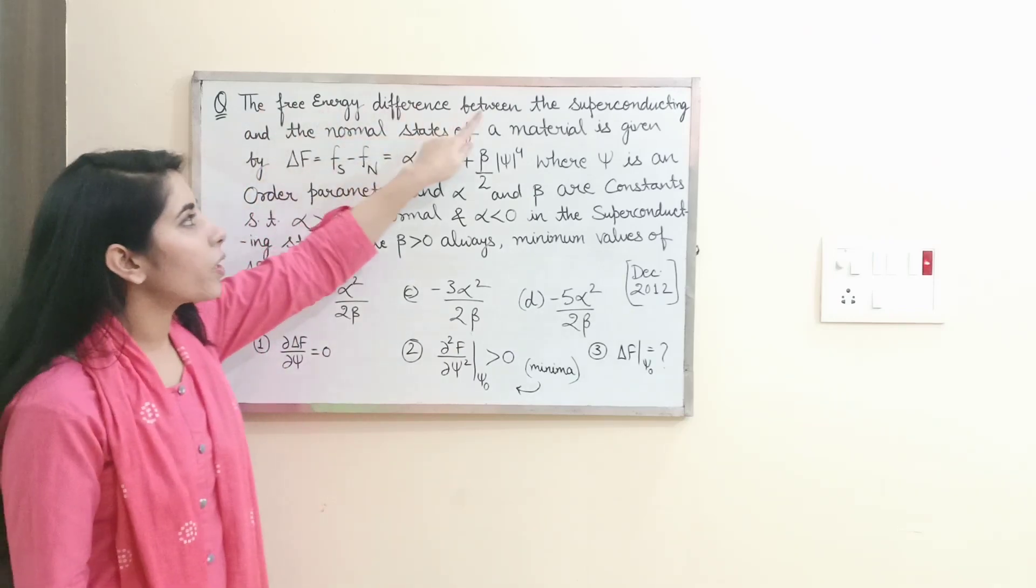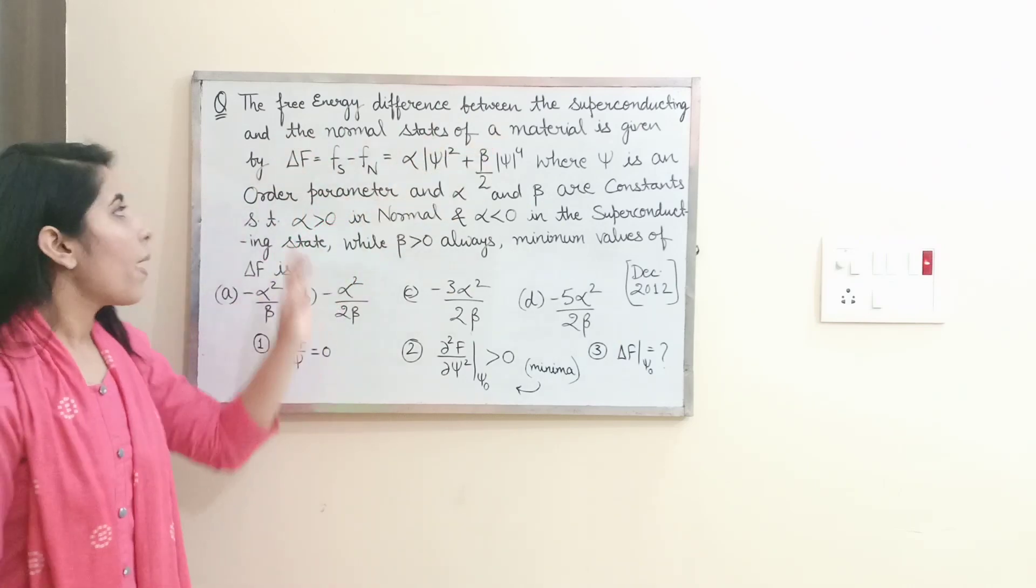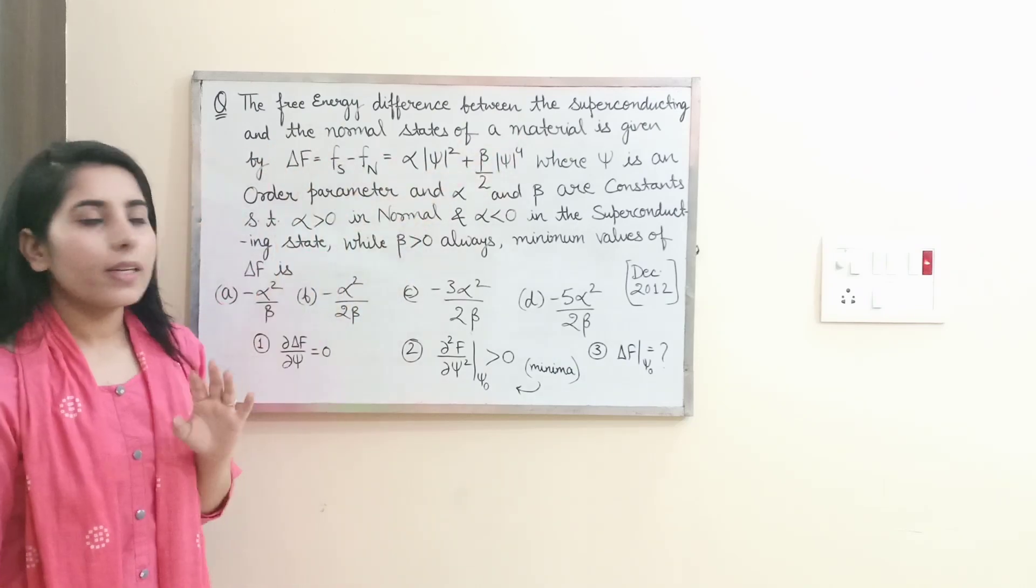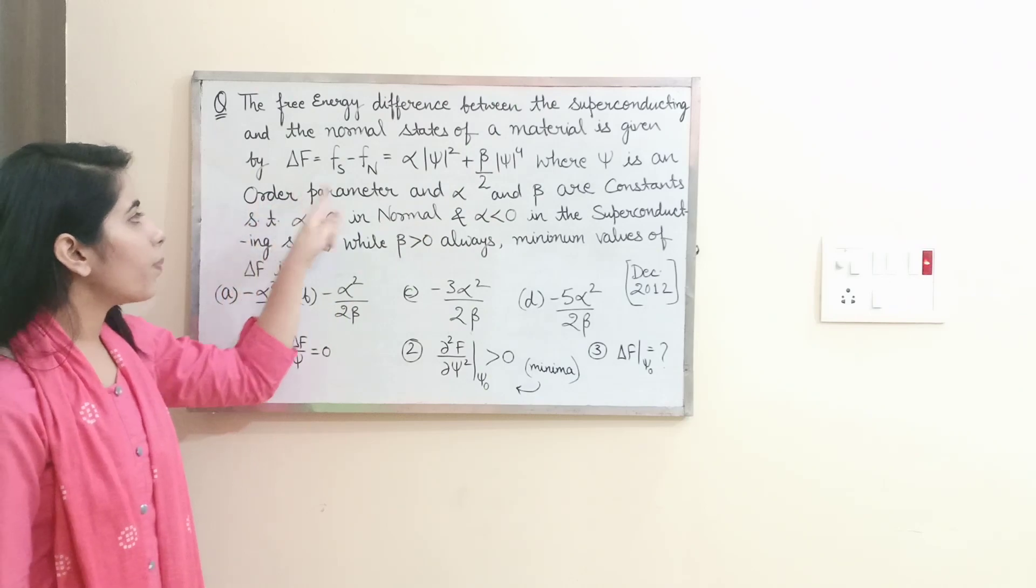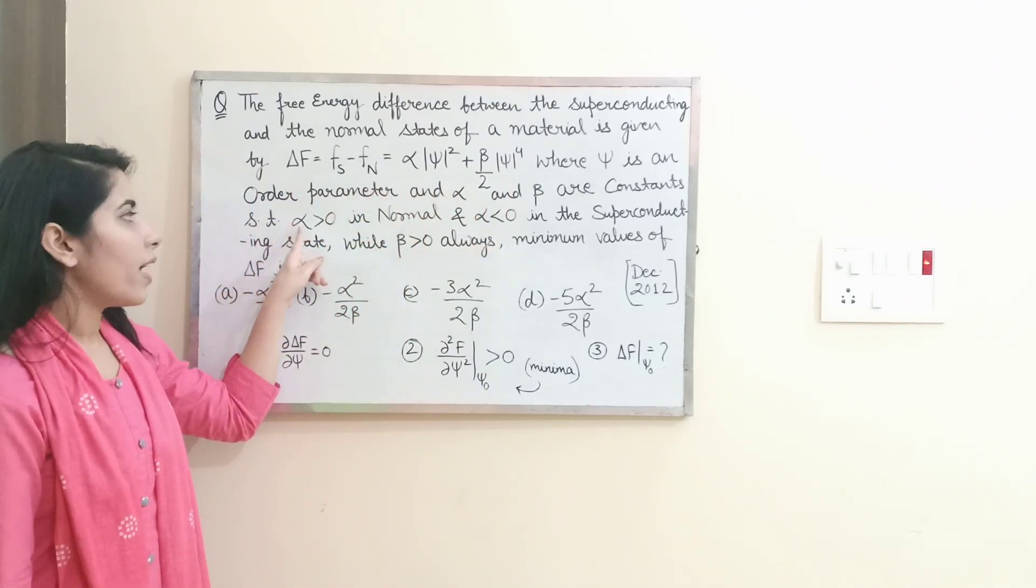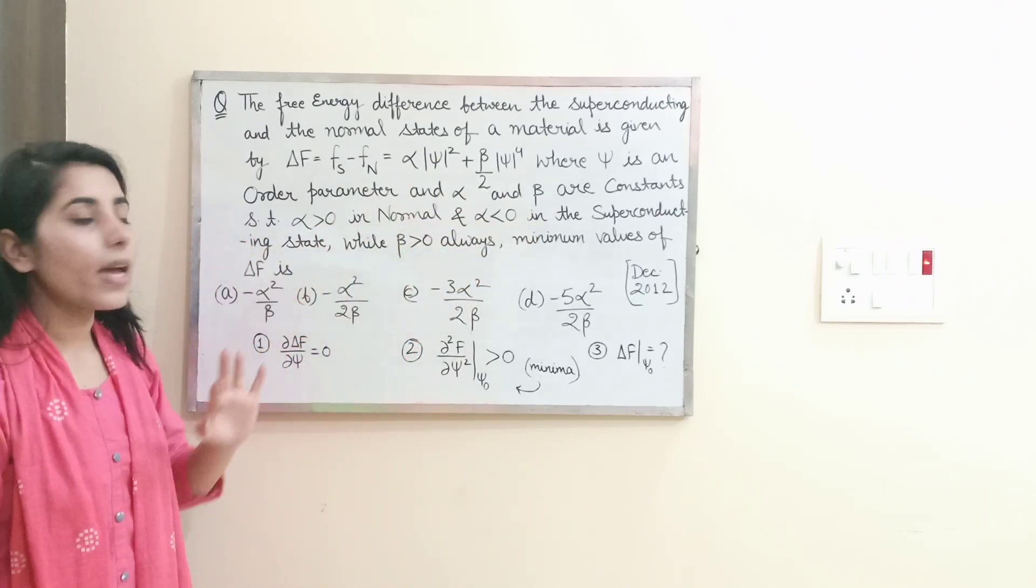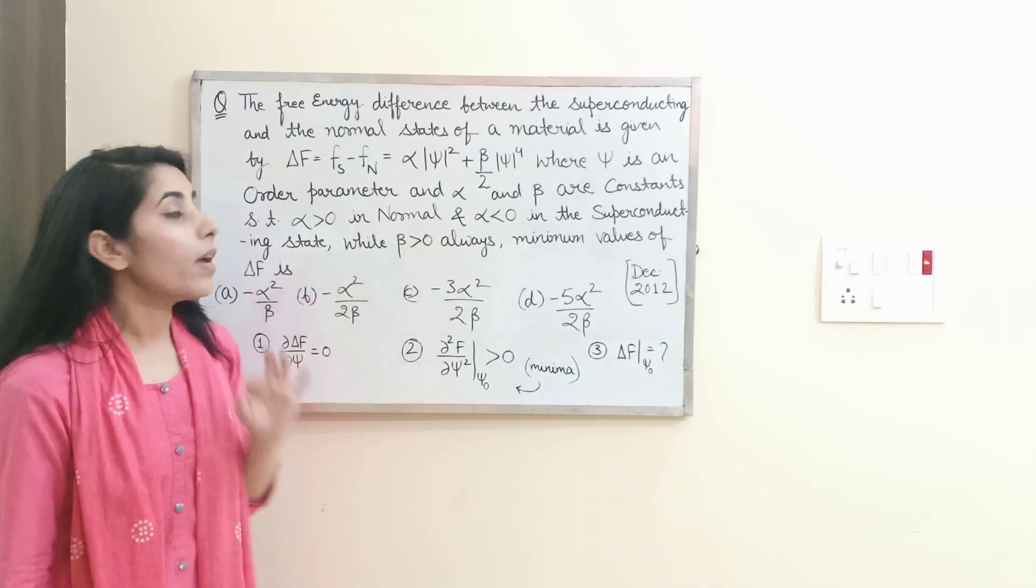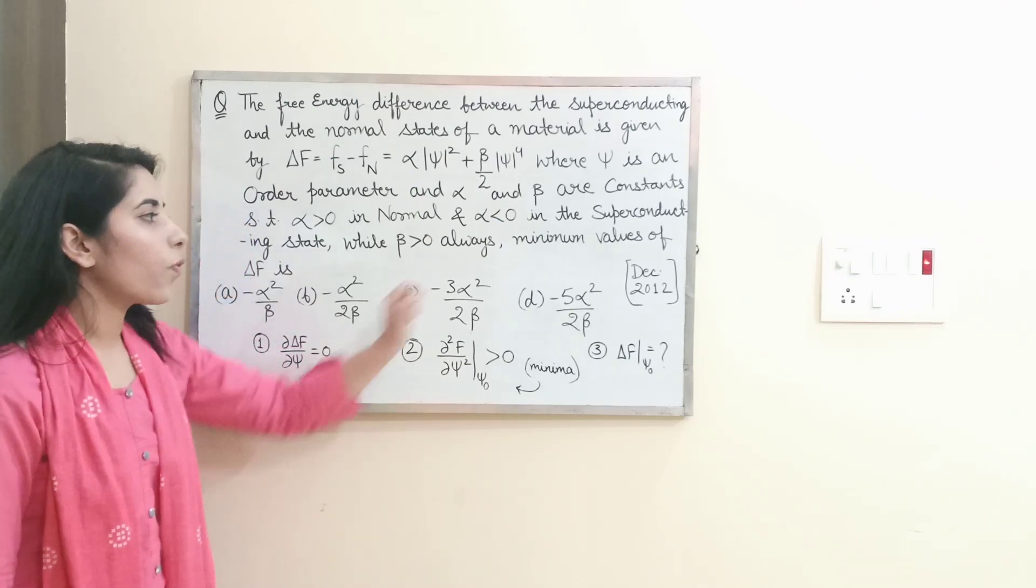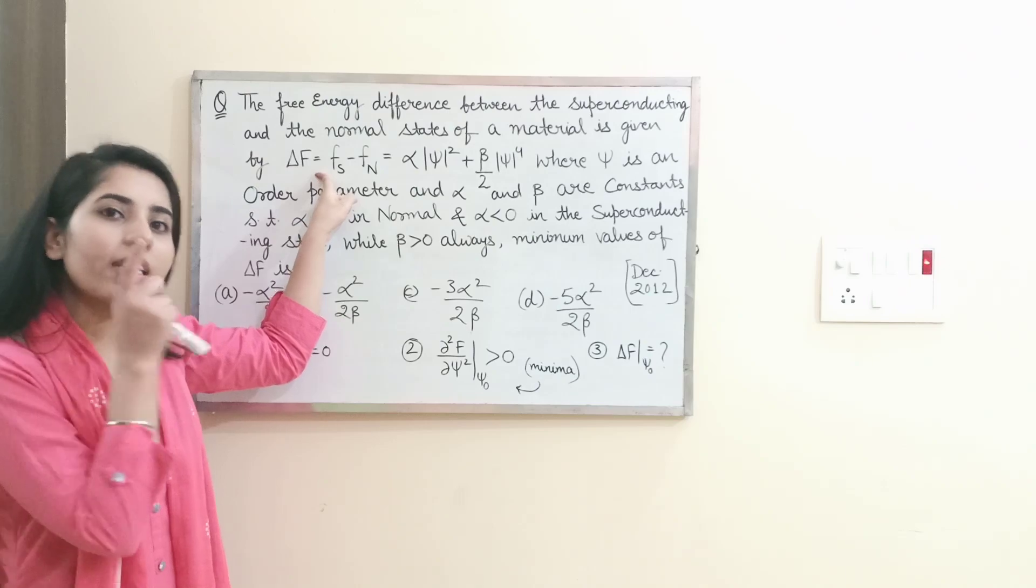The question is: the free energy difference between the superconducting and the normal states of a material is given by this. Sign is an order parameter, and alpha and beta are constants such that alpha is greater than zero in normal and alpha is less than zero in the superconducting state, while beta is greater than zero always. Minimum values of delta f is what? So they are asking us to find the minimum value of delta f.